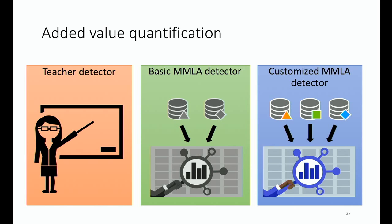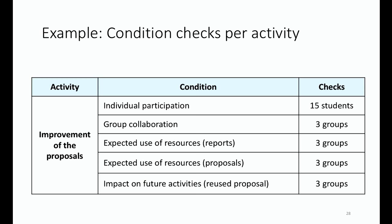The teacher detector modeled that for the teacher, the practice was 'no news, good news' — if nobody was complaining, everything was working. The basic MMLA detector used just digital information — logs from the platforms in the distributed learning environment. The customized version was the one the teacher prepared according to their needs. For each activity, we extracted the conditions the teacher wanted to check and had a number of checkpoints — for instance, individual participation, if there were 15 students, 15 checks to verify.